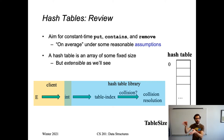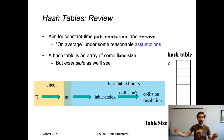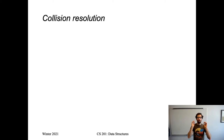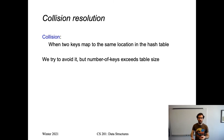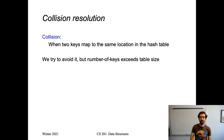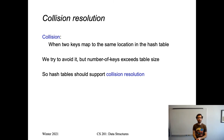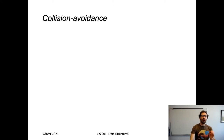This hash table has some array of fixed size, but it's extensible, just like with the array list. If we run out of room or need more space, we allocate a larger internal array and copy the data over. When we have two different keys end up at the same table index, we call this a collision. We're going to try and do what we can to avoid it, but the number of possible keys will typically greatly exceed the size of our table, so we can rarely make it impossible that two keys would map to the same location.